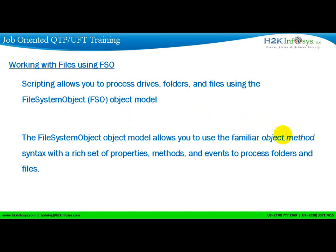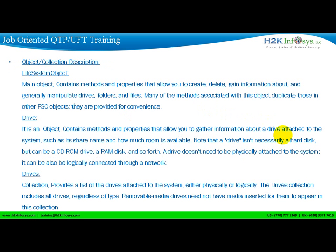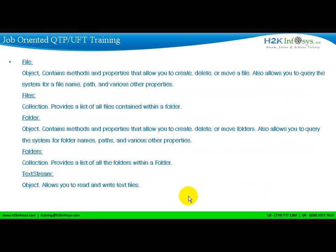The File System Object is the main or parent object, and then you have Drive, Drives, File, Files, Folder, Folders, and TextStream — these are all the different child objects of the File System Object. We are going to work with some of these objects and different methods to see what basic operations you can do.